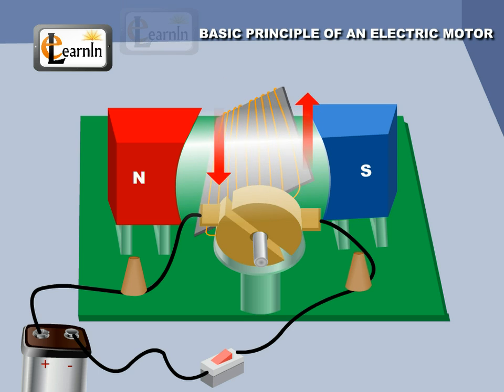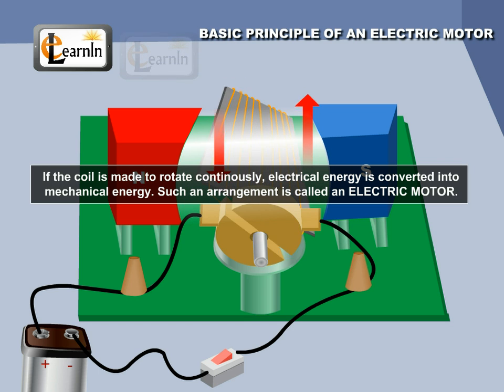If, by some arrangement, the coil is made to rotate continuously, electrical energy is converted into mechanical energy. Such an arrangement is called an electric motor.